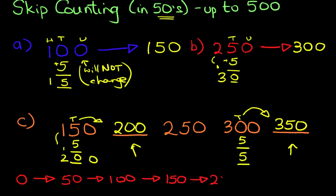After 150 is 200. Then comes 250. After 250 is 300. And so on. We can keep on going. So that is how we count in 50s with numbers up to 500.